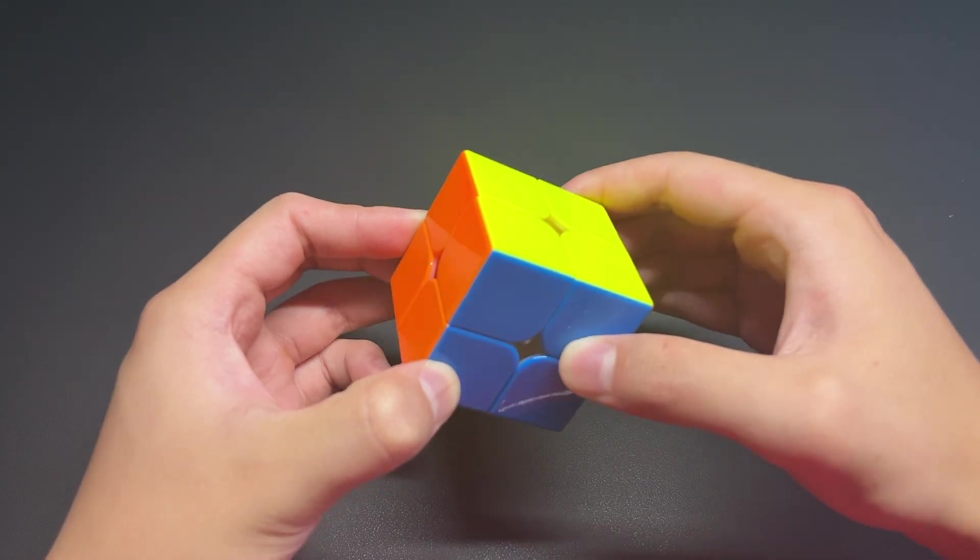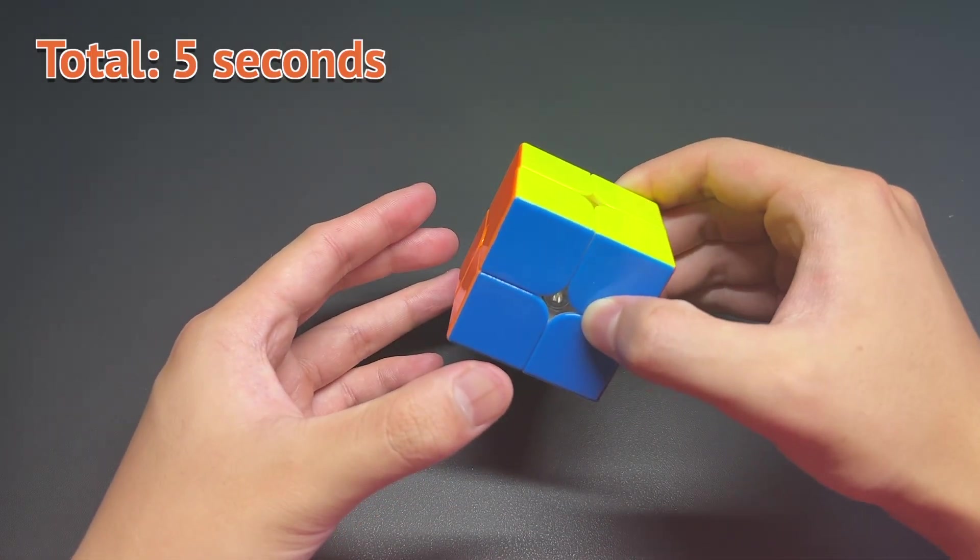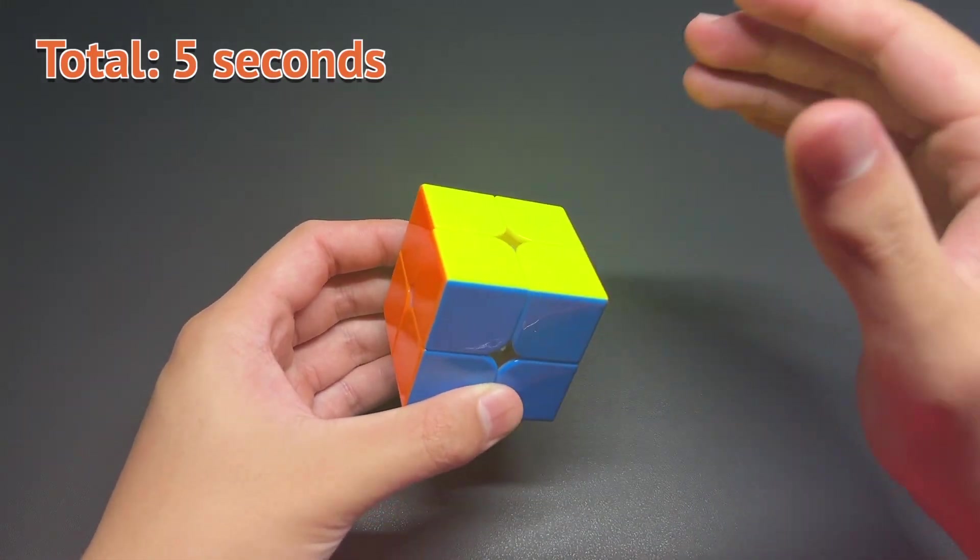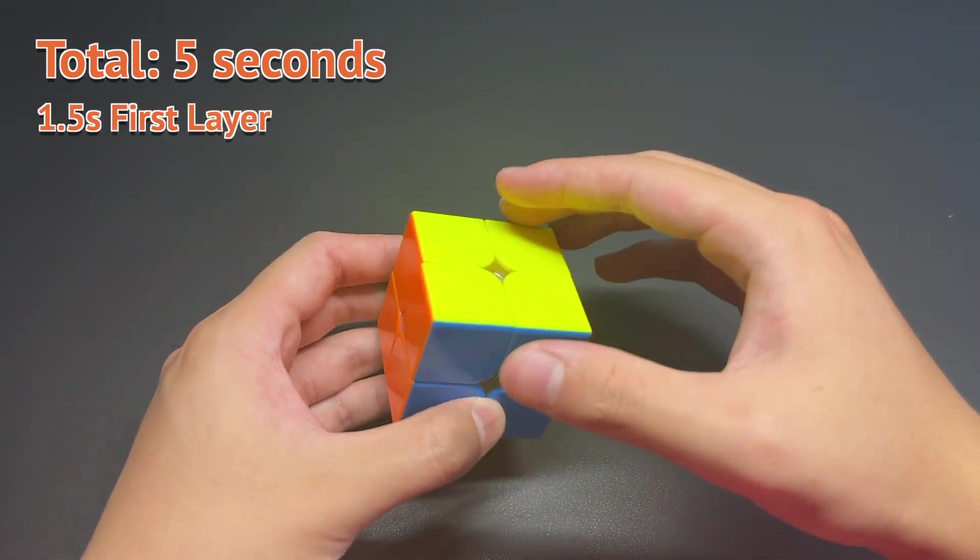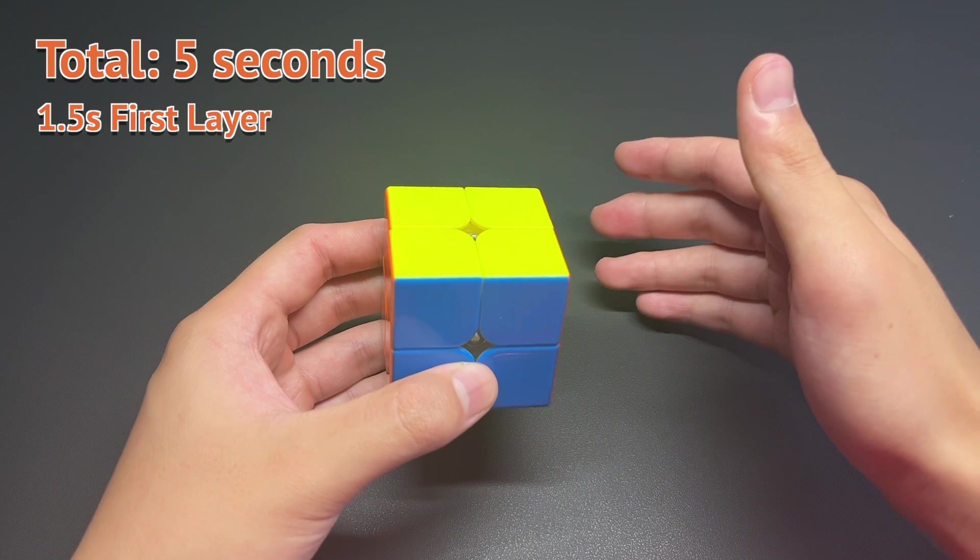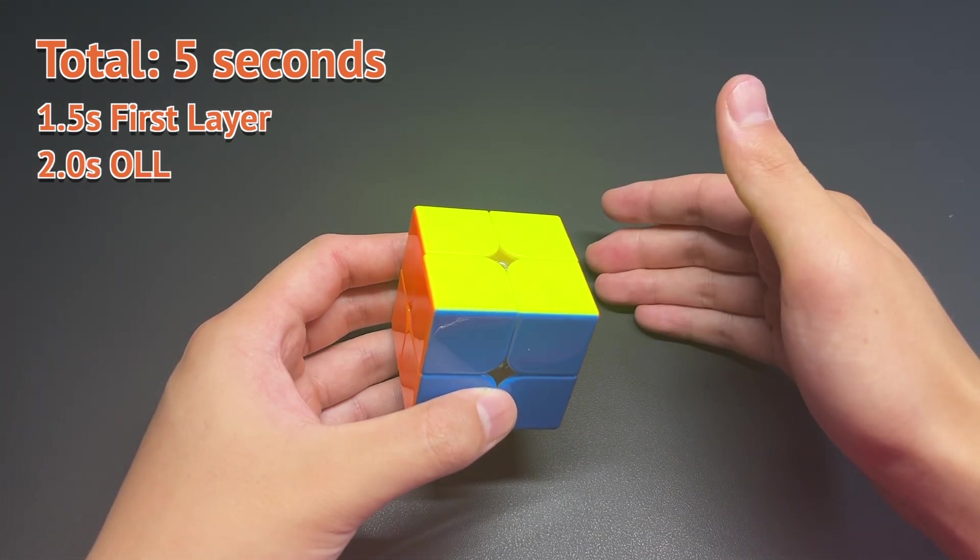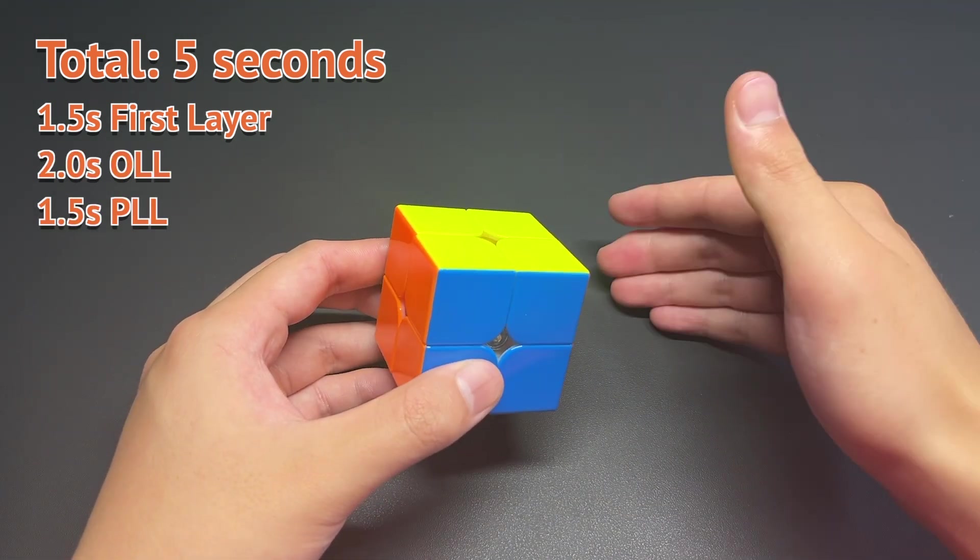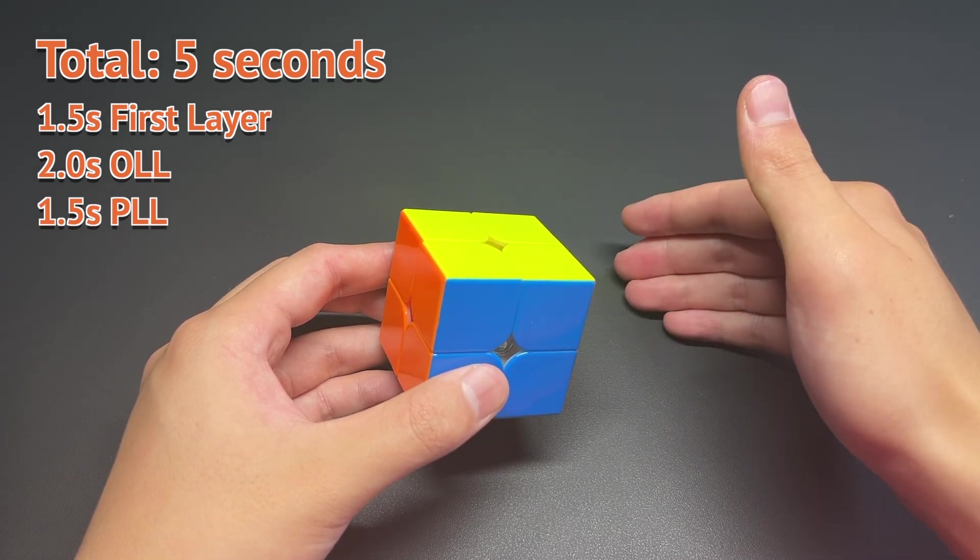So if our target for solving the entire cube is under 5 seconds, then we should be targeting to solve the first face, the white face, in under 1.5 seconds, and then solving the yellow face, OLL, in under 2 seconds, and then lastly, PLL in 1.5.